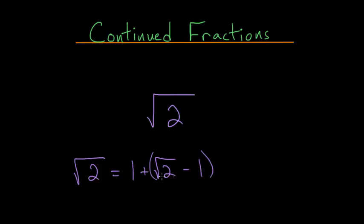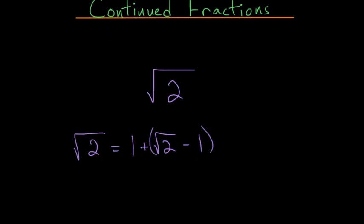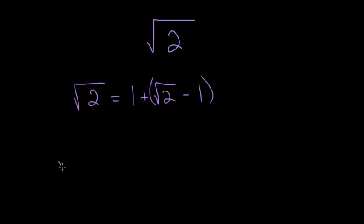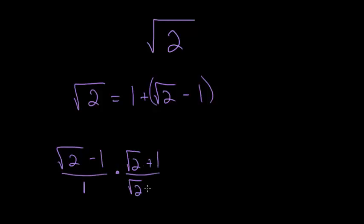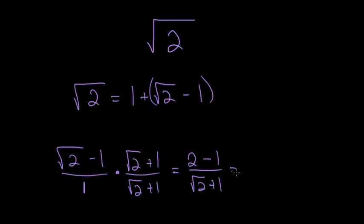We can take a closer look at the square root of 2 minus 1. Rewriting this as a fraction, we can multiply the top and the bottom by the square root of 2 plus 1. By doing that, the top will end up with a difference of two squares — the square root of 2 squared, which is 2, minus 1 squared — divided by root 2 plus 1. This simplifies to 1 divided by 1 plus root 2.